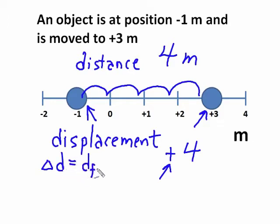Now I can write this as a formula. The change in position, the displacement, is the final minus the initial. The final position is plus three, minus minus one. That's the initial. And I get the plus four. Now that formula is very important for ones that are a little bit more complex.